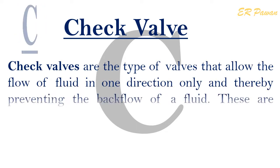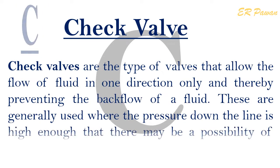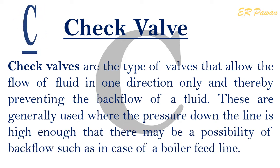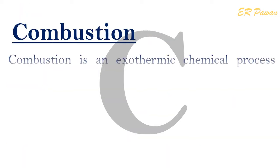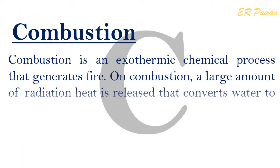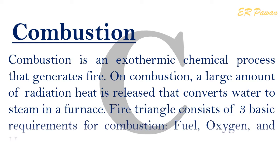C — Check Valve: Check valves are a type of valve that allow the flow of fluid in one direction only, thereby preventing the backflow of fluid. These are generally used where the pressure down the line is high enough that there may be a possibility of backflow, such as in the case of a boiler feed line. Combustion: Combustion is an exothermic chemical process that generates fire. On combustion, a large amount of radiation heat is released that converts water to steam in a furnace. The fire triangle consists of three basic requirements for combustion: fuel, oxygen, and heat.